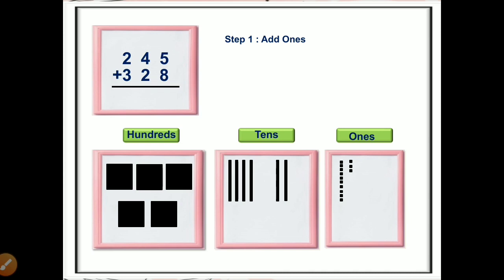Step one: add ones. The numbers in the ones position are 5 and 8. Five plus eight is equal to 13. Can we put the whole 13 in this place? No, we can't put the whole 13 here because this is only one place and we can only put one digit here, but 13 has two digits.